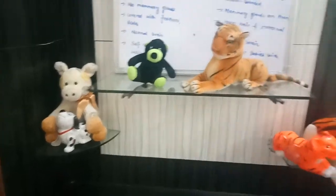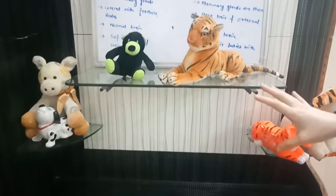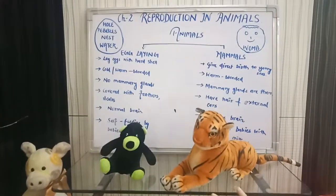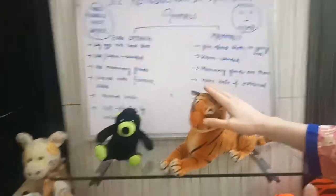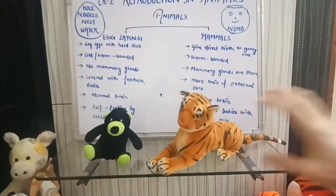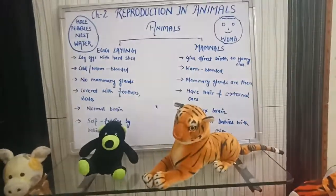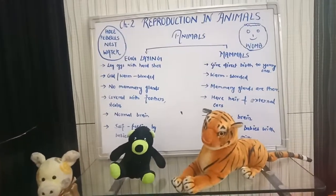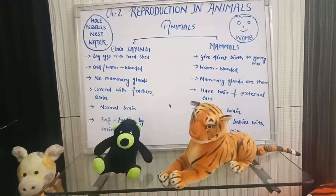All these animal examples are just to make you understand what the real purpose of reproduction is. Artificial or non-living things will not reproduce — they are just for decoration. Only living things will reproduce again and again.